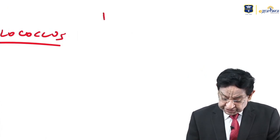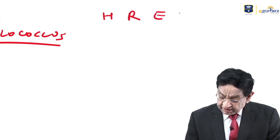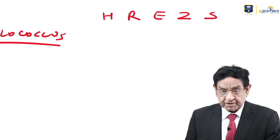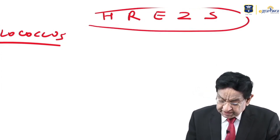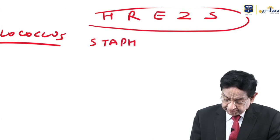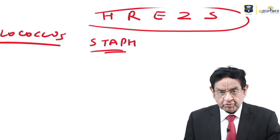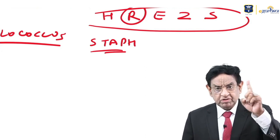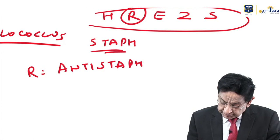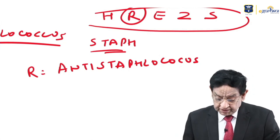These drugs that are anti-staphylococcal are also effective against tuberculosis. A gold medal question: out of the standard anti-TB drugs — INH, rifampicin, ethambutol, pyrazinamide, and streptomycin — which one can also be used for staphylococcal infection? The answer is rifampicin. This is not known to the majority of students — rifampicin is a very good anti-staphylococcal agent.